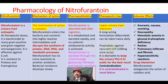Prophylaxis against recurrent UTI, that is urinary tract infection, is 100 mg on daily doses. It is desirable to keep the urinary pH less than 5.5, that is acidic, for the best result of nitrofurantoin.